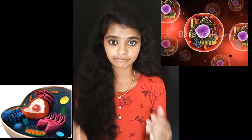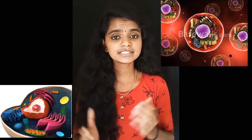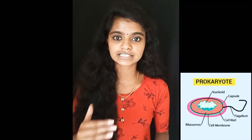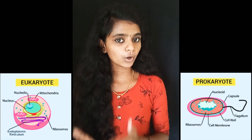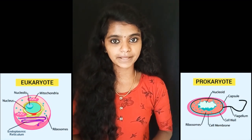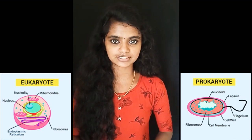First of all, it is widely known that each living organism is composed of a structural unit called cell. In biology, a cell is defined as the basic membrane-bound unit that contains the fundamental molecules of life and of which all living beings are composed. Cells are classified into two types: prokaryotic cell and eukaryotic cell, distinguished on the basis of their cellular characteristics.